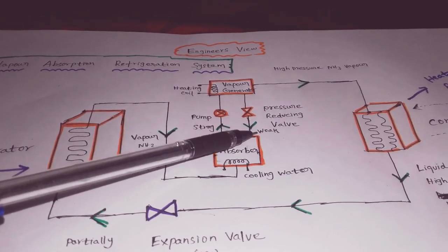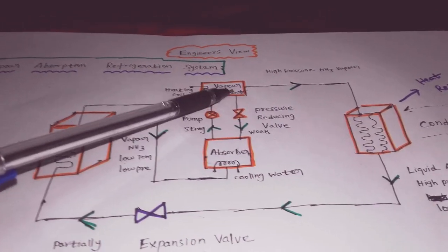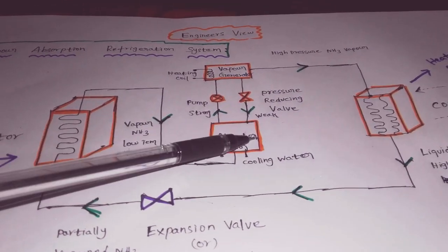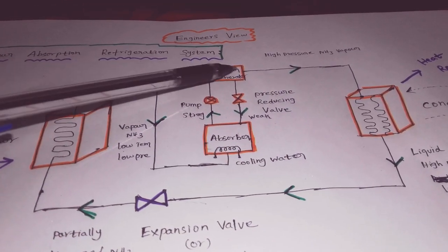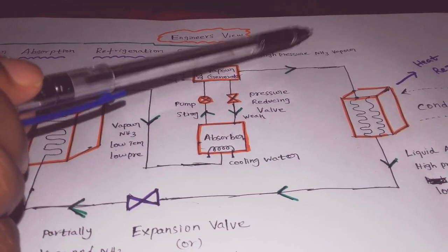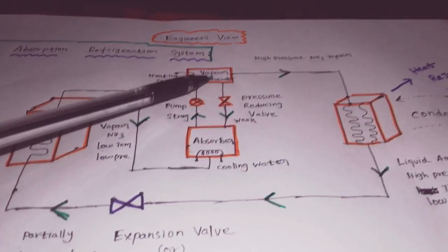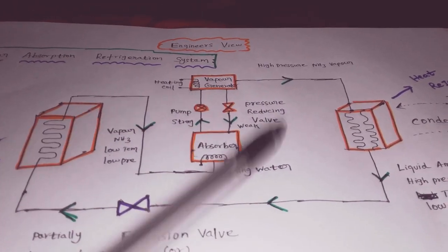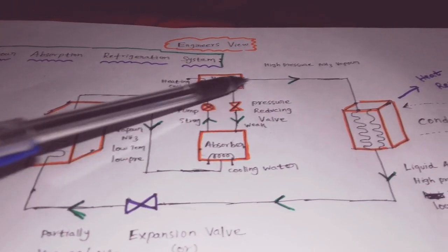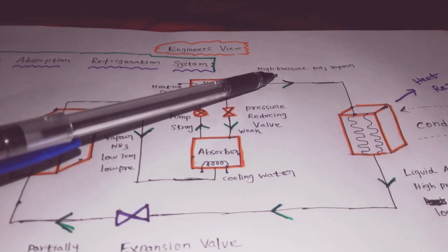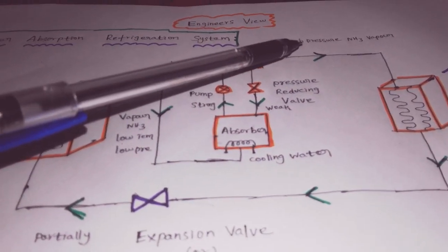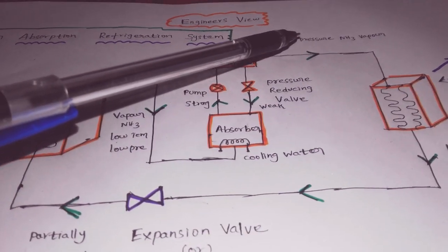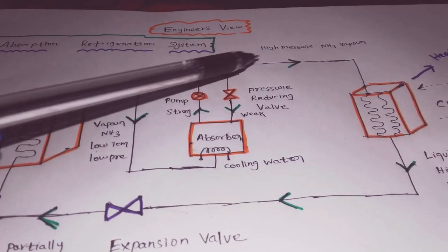When ammonia evaporates from the solution, the remaining solution becomes a weak solution, as most of the ammonia has left. The high pressure ammonia vapor produced is at high pressure and high temperature, and exits the vapor generator heading toward the condenser.